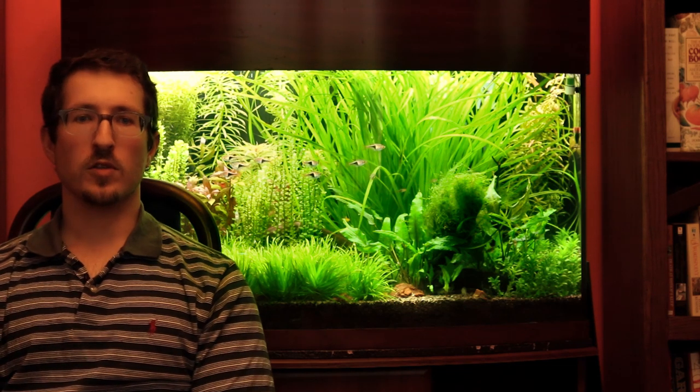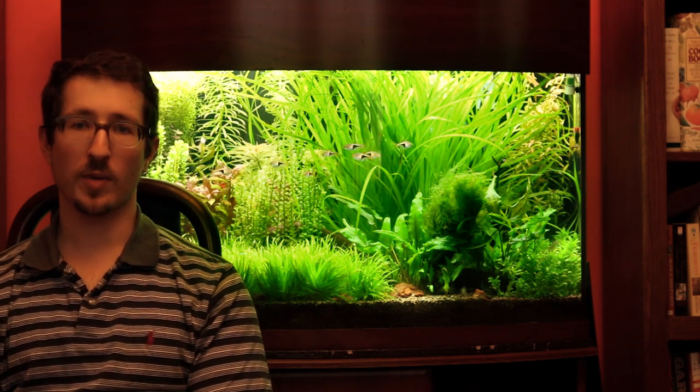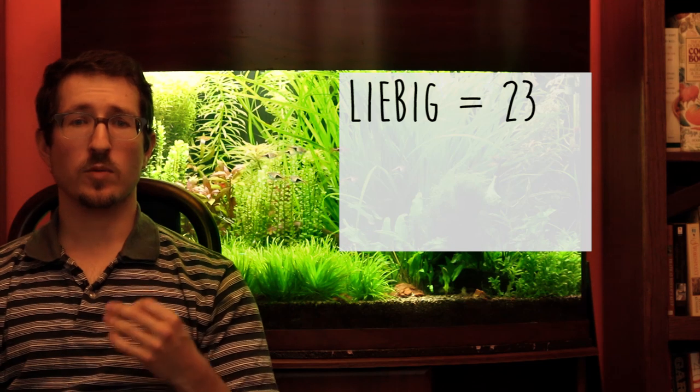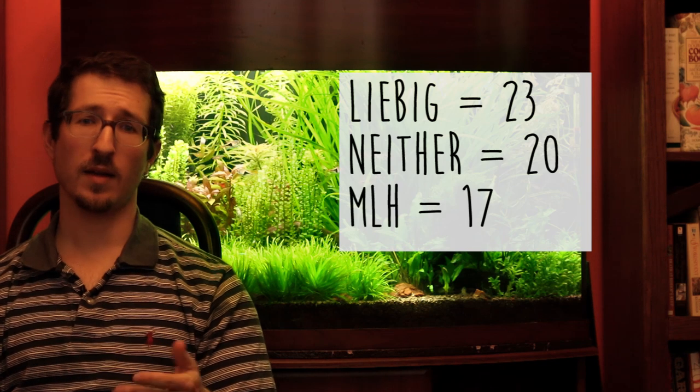In the Rubio, Zhu, and Lynch paper, they used a plant near and dear to all our hearts — Lemna minor, but you might know it as duckweed. The results support the general hypothesis that neither Liebig's law nor the Multiple Limitation Hypothesis adequately account for plant responses to all mineral nutrients. Plant responses to some nutrients followed Liebig's law, responses to other nutrients followed the MLH, and in some cases neither paradigm correctly predicted plant response. 23 of the 60 responses analyzed were classified as Liebig, 20 were classified as undefined, and 17 as MLH.